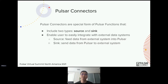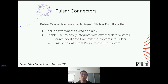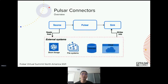One special form of Pulsar functions developed in the community is called Pulsar connectors. It includes two parts: source and sink. For source, it fetches data from external systems instead of reading from multiple topics, ingesting that data into Pulsar. For sink, it's the other way around — instead of sending results to Pulsar topics, it sends data to external systems. This framework enables users to move data into Pulsar or out of Pulsar to other storage systems.